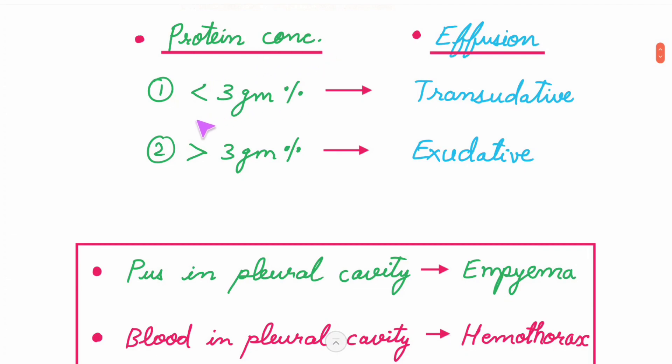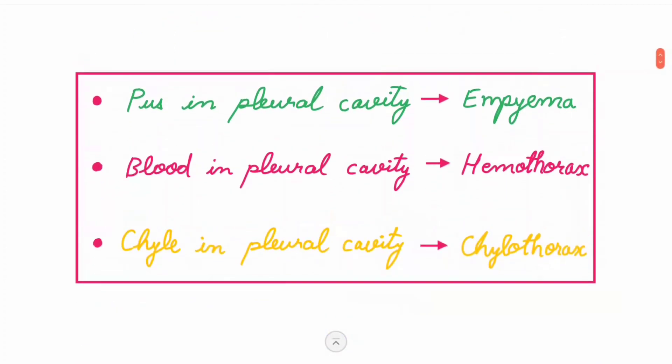Protein concentration less than 3 grams percent is called transudative effusion, whereas more than 3 grams percent is called exudative effusion. Pus in the pleural cavity is called empyema, blood is hemothorax, and chyle is chylothorax. Chyle is the milky fluid that consists of fats and lipids produced during digestion.